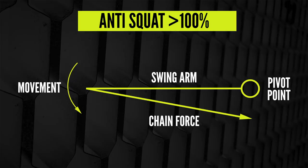Whilst high anti-squat numbers might seem really appealing, they do have some small downsides too. With really high anti-squat, when you're pedaling you're putting a lot of chain tension on, effectively pulling the hub down, which stands the bike up nicely when pedaling — but when you start hitting bumps it's going to feel quite harsh, and to a degree you're going to get some kickback in those pedals as it tries to counter those forces.